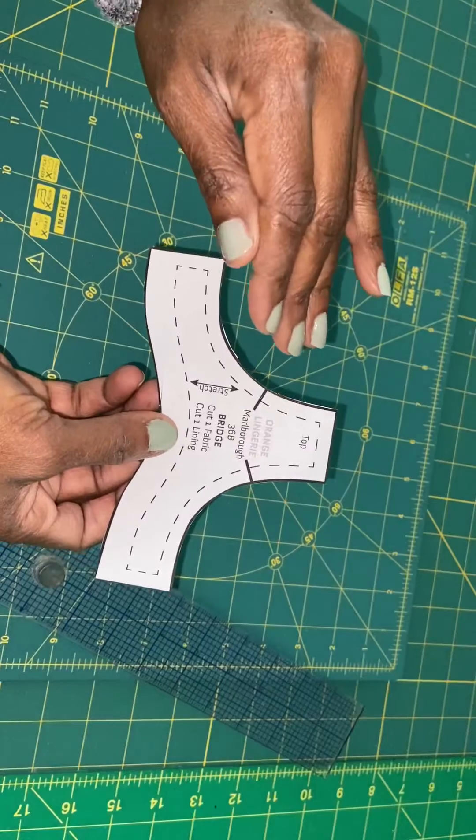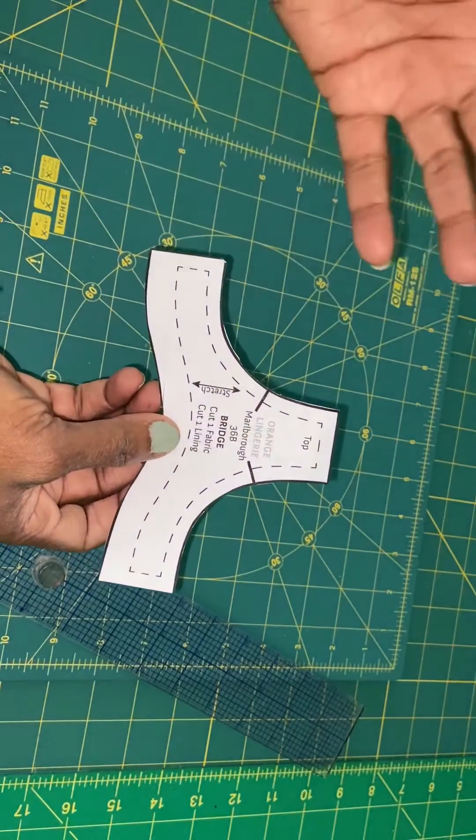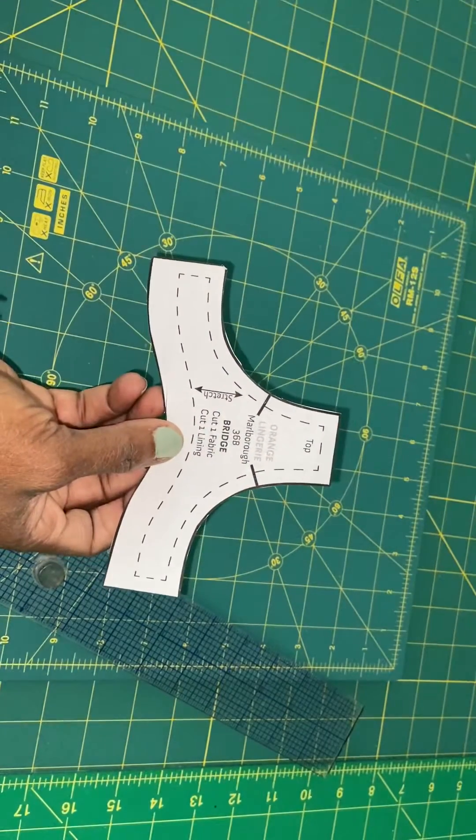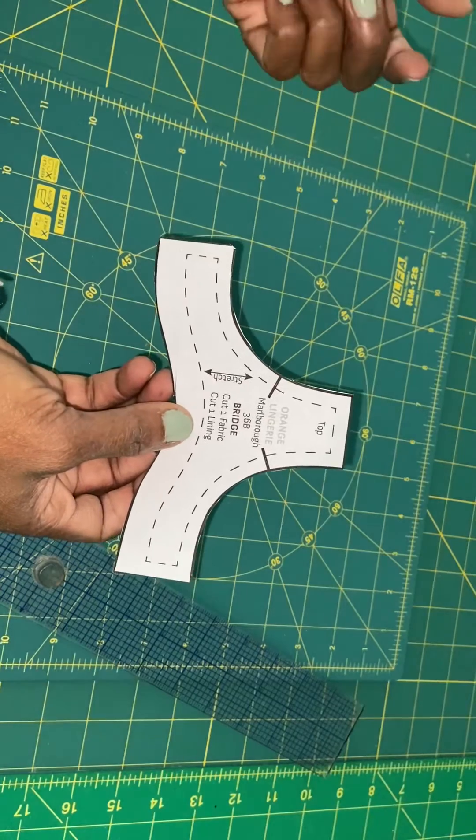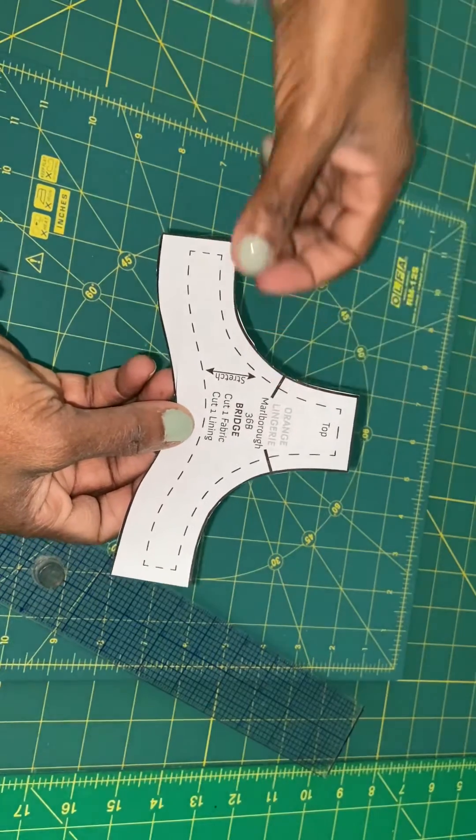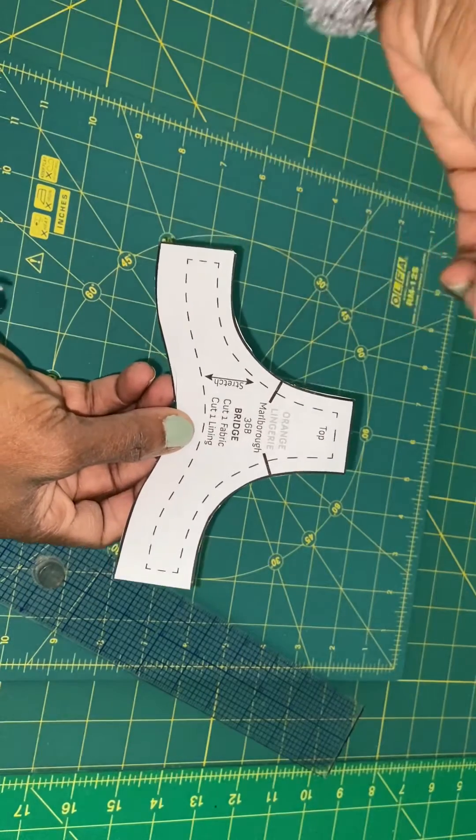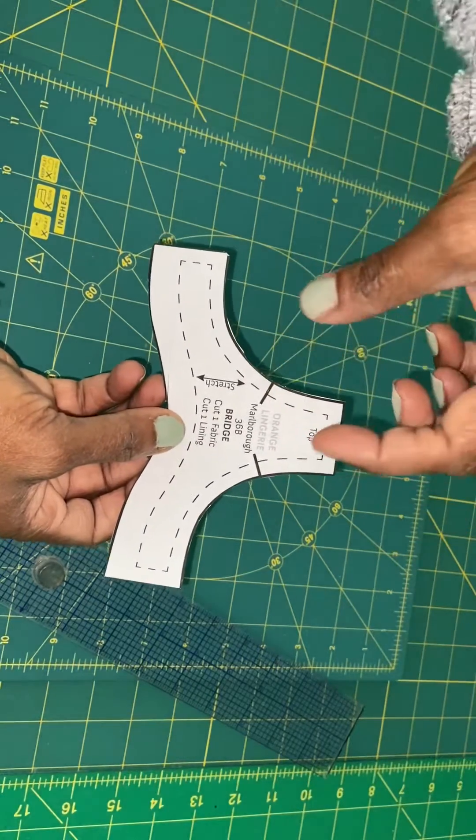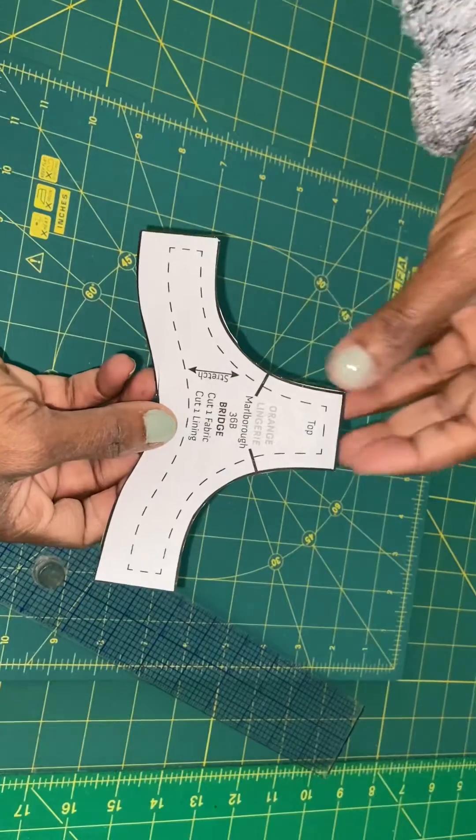Make another muslin, just a band. You can baste it, it doesn't matter. Put power net in the back, baste the hook and eye closures on and put channeling on. You can baste those and put wires in and this bridge must fit on your chest wall.